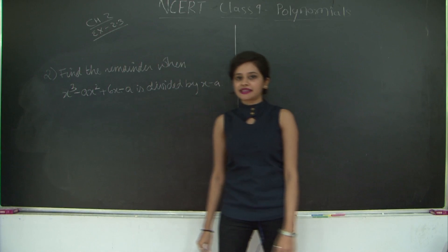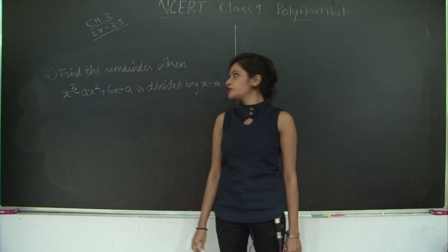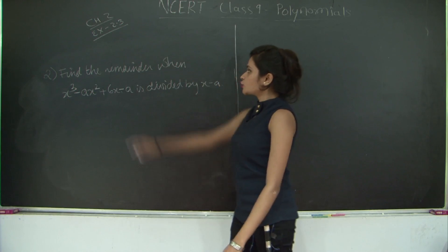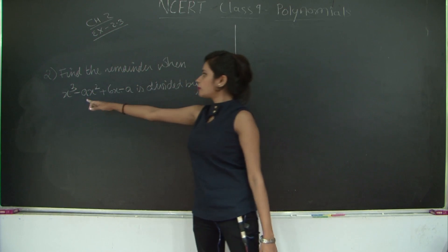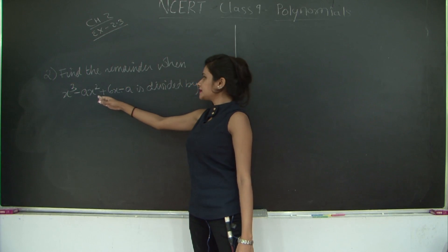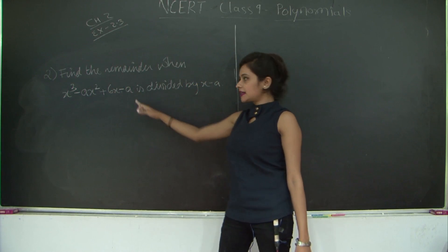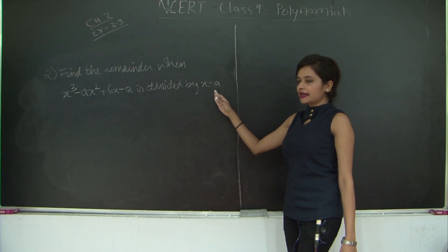Hello students, let's continue with exercise 2.3 of chapter polynomials which is based on remainder theorem. So we need to find the remainder of polynomial given by x³-ax²+6x-a when it is divided by x-a.